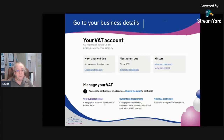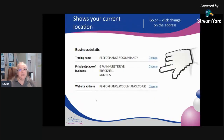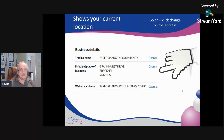What we're going to do now is go to 'My Business Details'. Click on your business details and this will tell you exactly the name of the business that is VAT registered, the place of business, and the website address. What I want to do is change the place of business, so click on 'Change'.